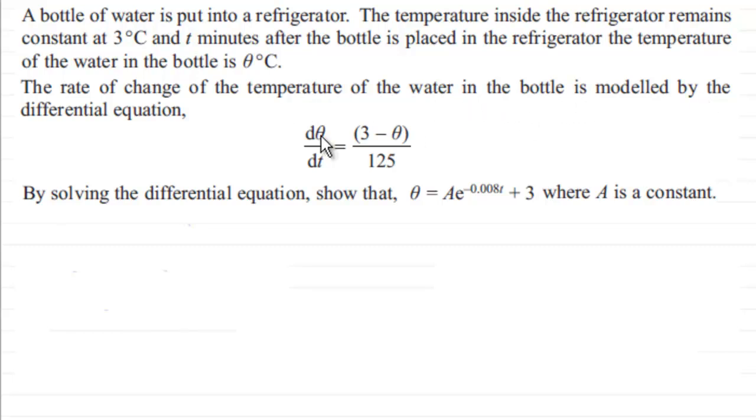The rate of change of the temperature of the water in the bottle is modeled by the differential equation here: dθ/dt equals (3-θ) all over 125. And we've got to solve this differential equation and show that θ equals Ae to the power minus 0.008t plus 3, where A is a constant.